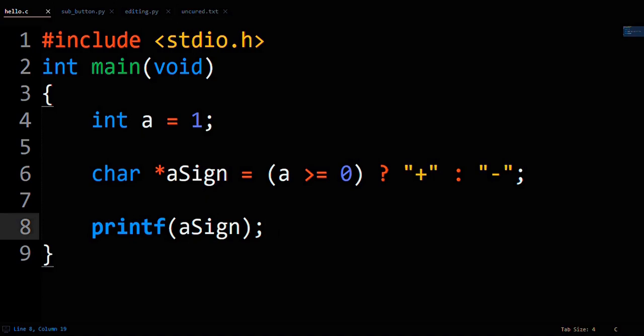You then assign A's sign by using the ternary operator. The format of the ternary expression is condition, question mark, value to evaluate to if true, colon, value to evaluate to if false.